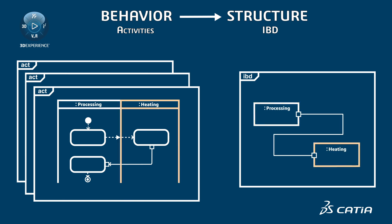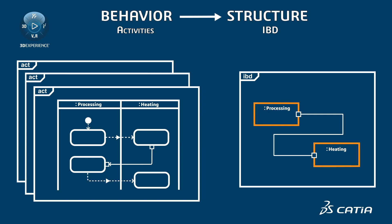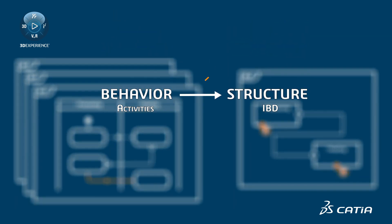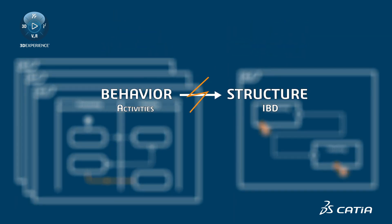It can be difficult to successfully create a structural model from scratch with reference to a behavior model. It is even more difficult to detect inconsistencies in later stages as the model evolves. Thus, there is a clear risk that models may become misaligned and inconsistencies may remain unnoticed.